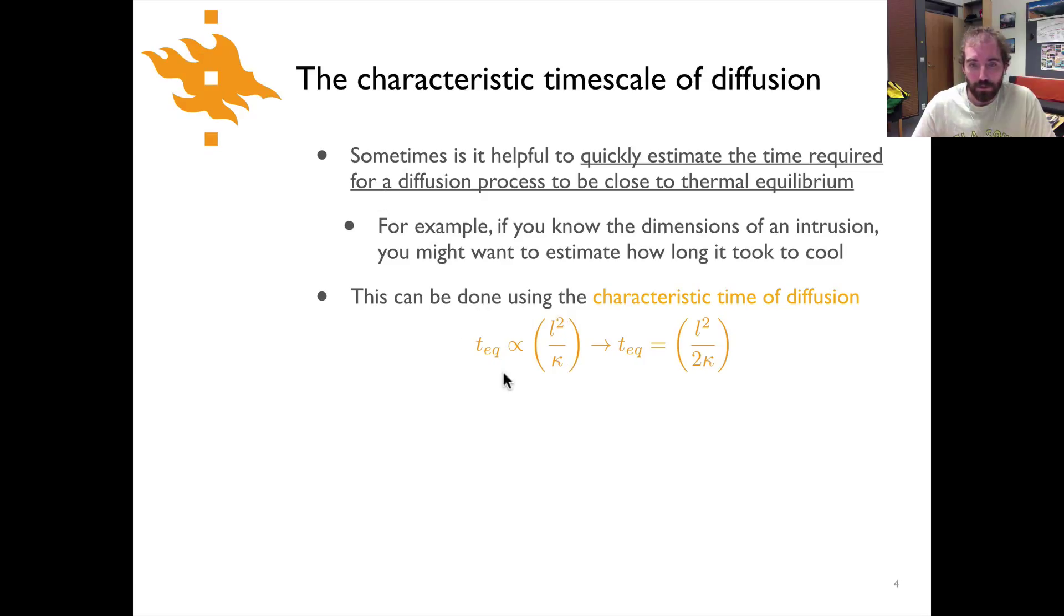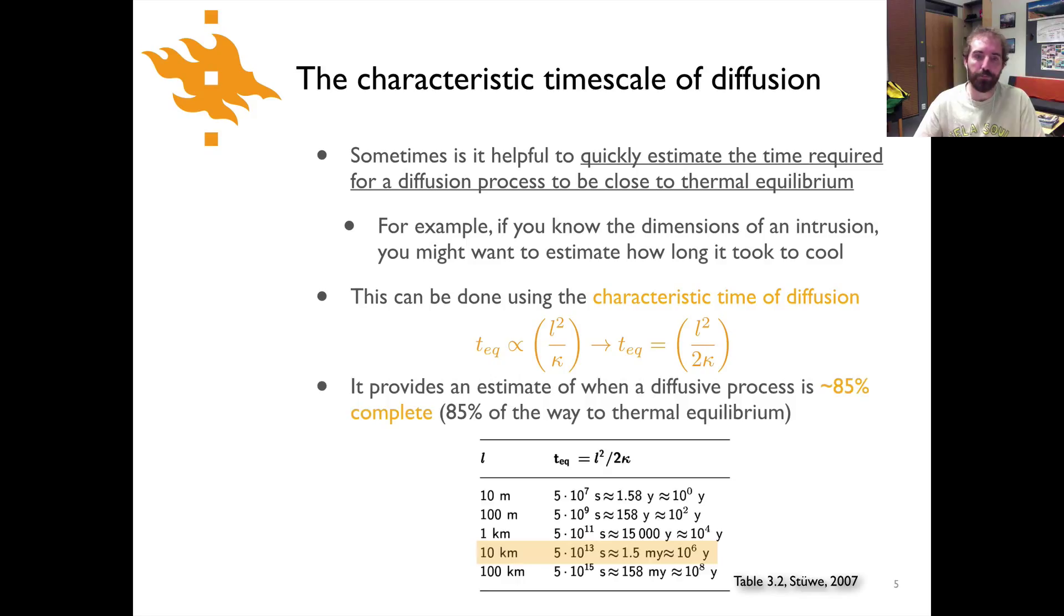The equation is relatively simple. We essentially are saying that the characteristic time is proportional to the dimensions of whatever the body is. So length squared, if it was a dike or a sill, it would be how wide or how thick the igneous intrusion is, divided by the thermal diffusivity kappa, which you saw in the previous video lecture. Rather than saying it's proportional, we can be more specific and say that the characteristic time is simply equal to the length squared divided by two times kappa. This will provide us with an estimate of when a diffusion process is about 85% of the way to its new thermal equilibrium.